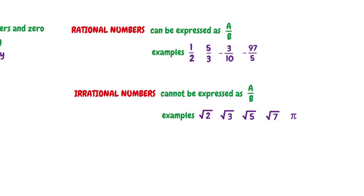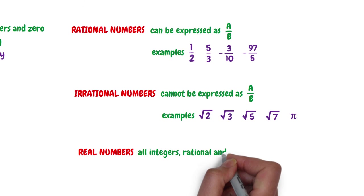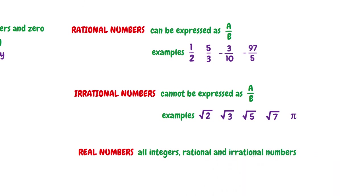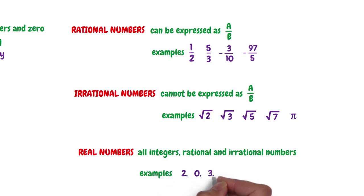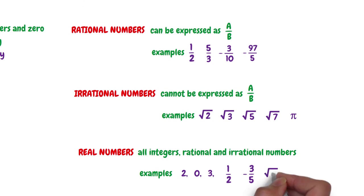The last set of numbers is the real numbers. Real numbers are a set of all integers, rational and irrational numbers. All the sets of numbers we've talked about are part of the real numbers. Examples of real numbers include all integers such as negative 2, 0, and 3, all rational numbers such as 1 over 2 and negative 3 over 5, and all irrational numbers such as the square root of 2 and pi.